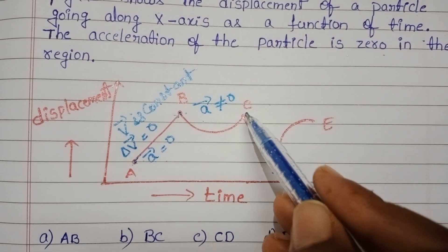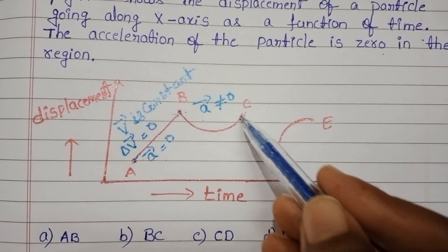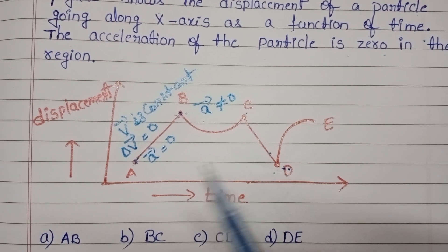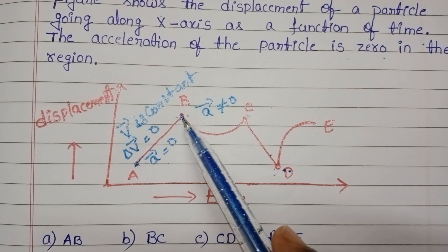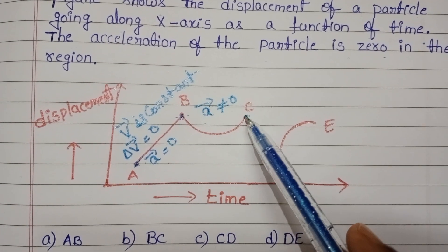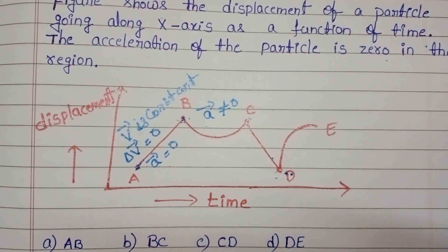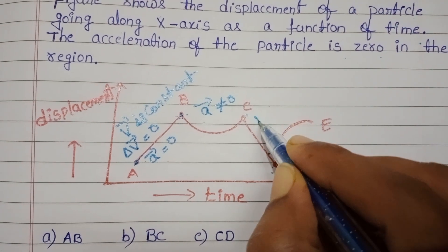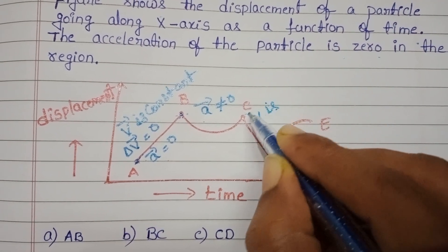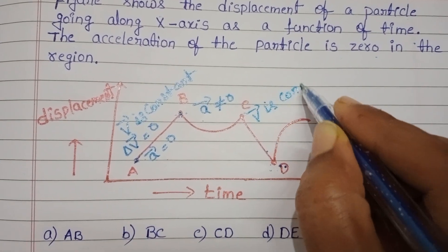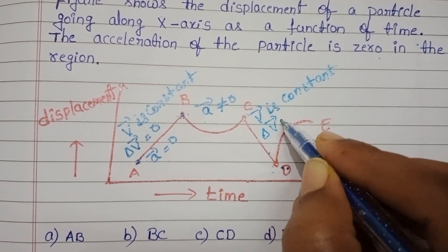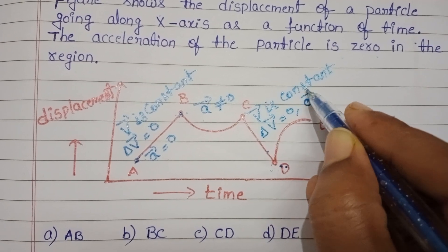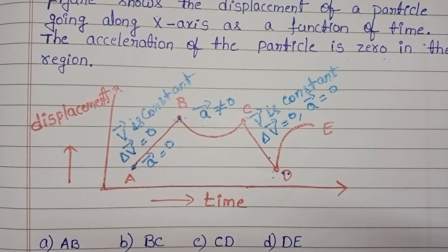And in C to D region, slope is constant. But the only difference between AB and CD region is in AB region slope is positive, but in CD region slope is negative. But here also velocity is constant. And when velocity is constant, change in velocity equals zero. Then acceleration is also equal to zero.